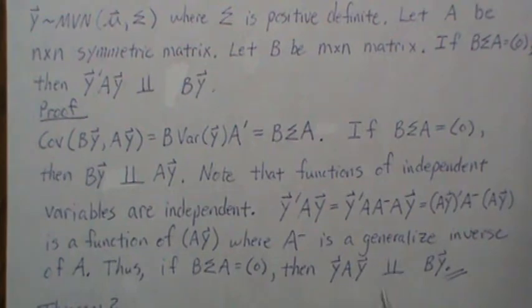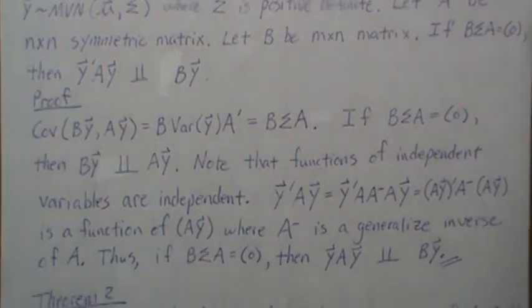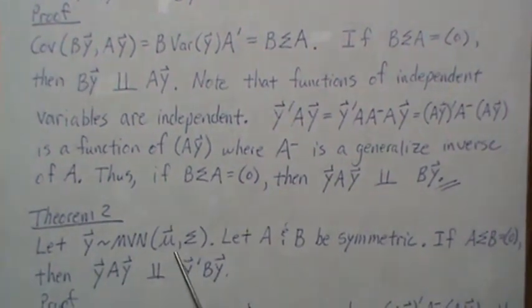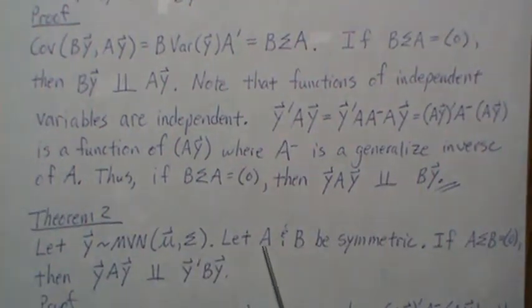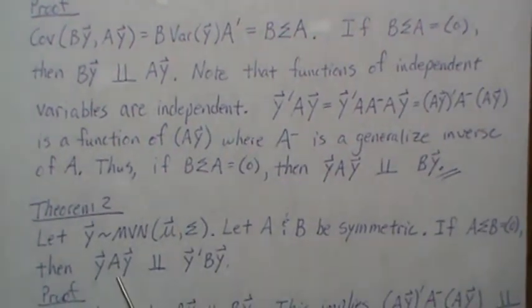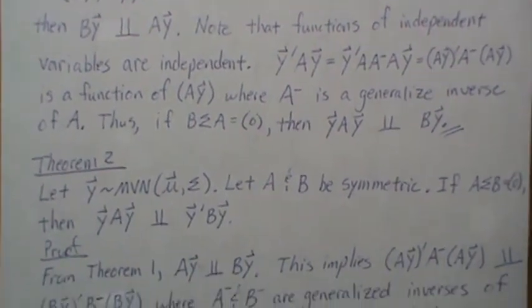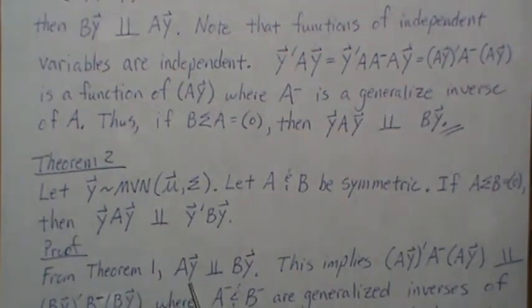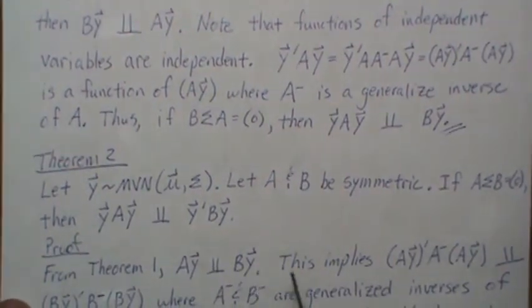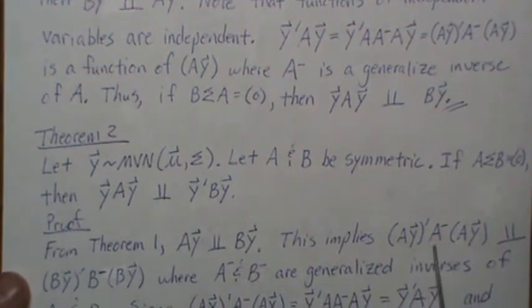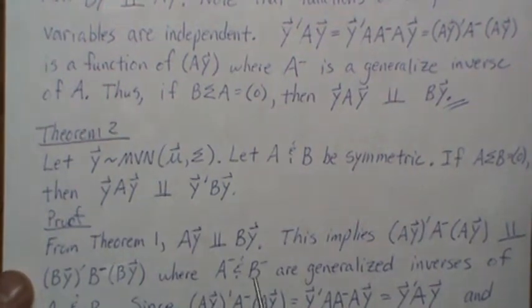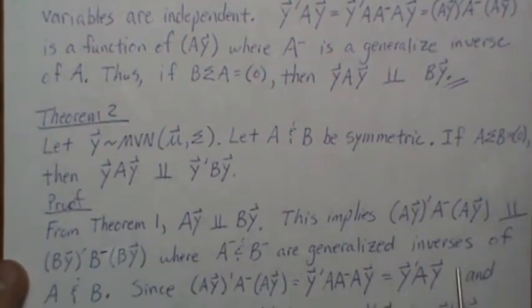Now one more proof. Let Y be multivariate normal mean vector μ and Σ covariance matrix. Let A and B both be symmetric, and if AΣB equals zero, then these two quadratic forms are independent. Note from Theorem 1 that if this is zero, then A'Y is independent of BY, where A' and B' are the generalized inverses of A and B.